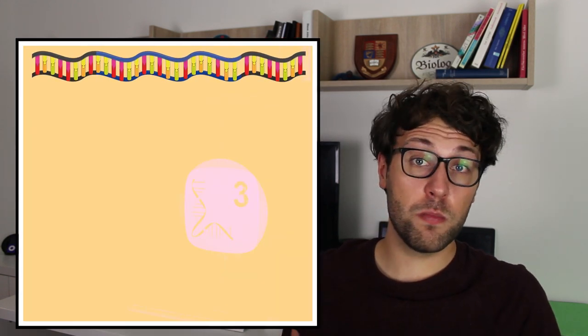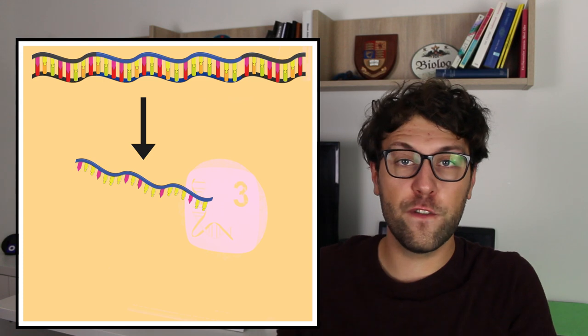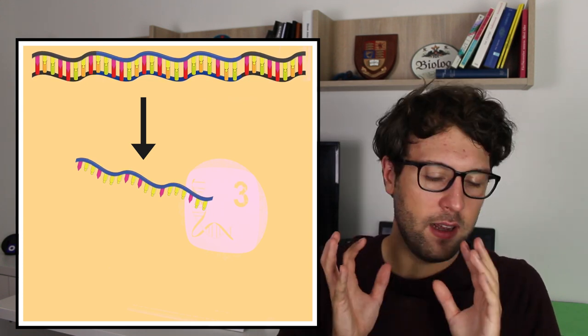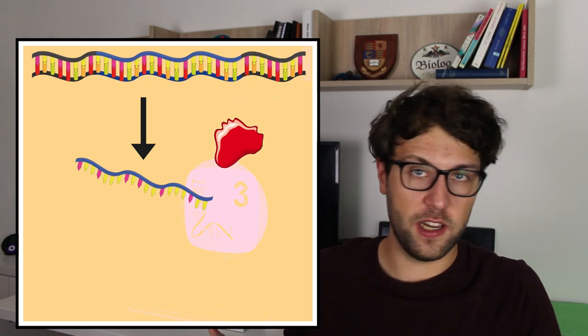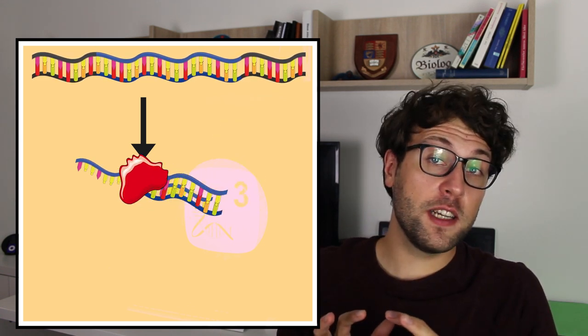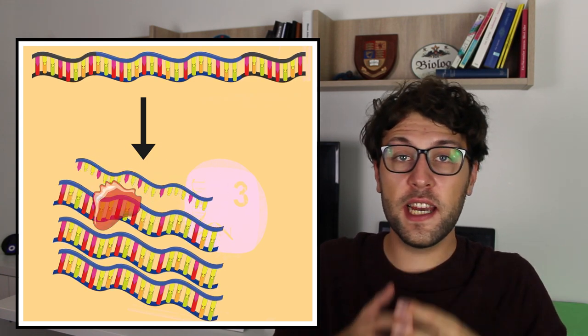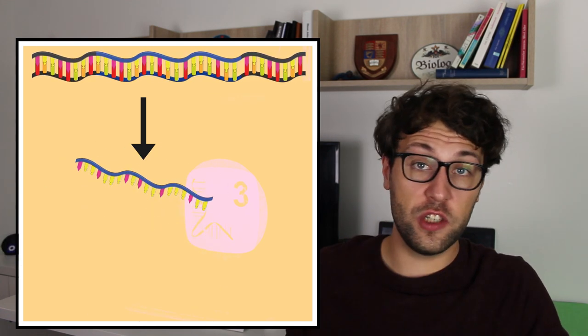Class 1 transposons change their location in two stages. Once they become activated, retrotransposons can convert their genetic information into RNA. At the same time, they also produce a protein called reverse transcriptase. And this protein then converts the RNA back into DNA and helps to get it into the genome.